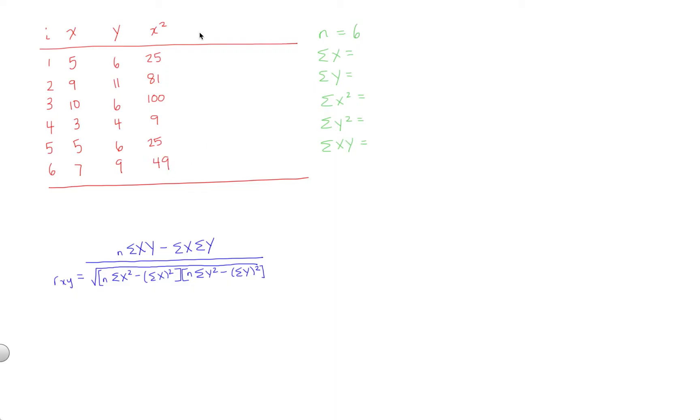Next we need our y squared column. This is the same idea. We take our y values, square them, and put them here. So 6 squared is 36, 11 squared is 121, 6 squared again 36, 4 squared is 16, 36 once more, and 9 squared is 81.